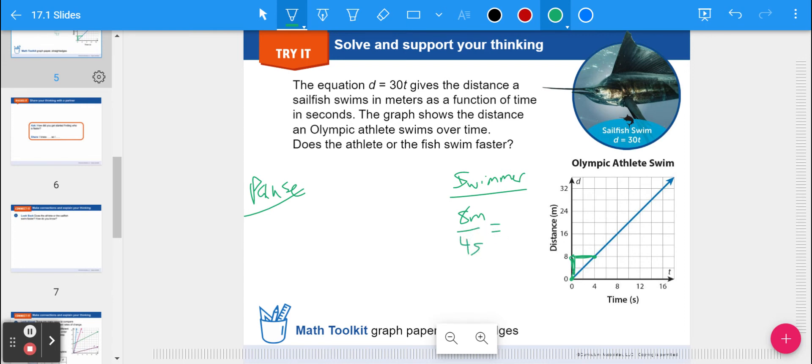And when you reduce that, 8 divided by 4, 8 over 4 reduces to 2 over 1. So 2 meters per second. Alright, so that's the swimmer speed. It goes 2 meters per second. It's actually not bad.